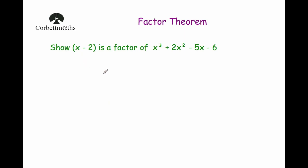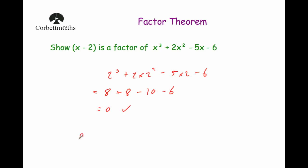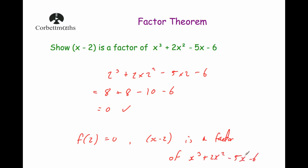So let's substitute 2 in: 2 cubed plus 2 times 2 squared minus 5 times 2 minus 6. Working that out: 2 cubed is 8, plus 2 squared is 4 times 2 is 8, minus 10, minus 6. So 8 plus 8 is 16, take away 10, take away 6 equals 0. Therefore, since f of 2 equals 0, x minus 2 is a factor of x cubed plus 2x squared minus 5x minus 6. I always finish with a statement so the examiner knows I've used factor theorem.